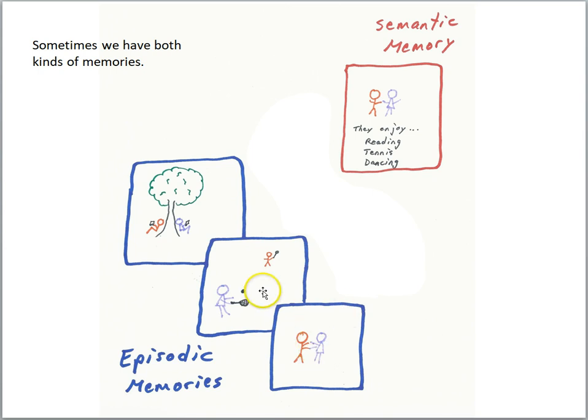If we can retrieve those episodic memories, then we have both kinds of memories. And depending on what the question is, I might call up some semantic memory or I might retrieve episodic memories.